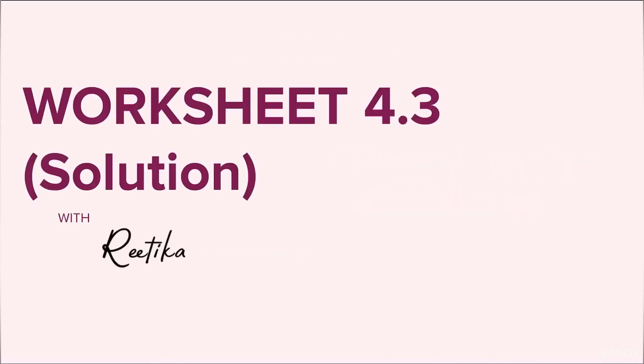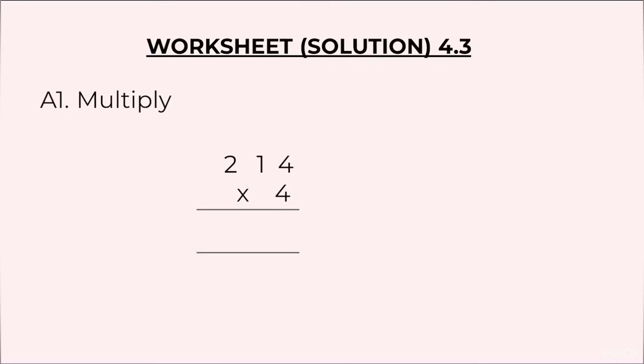Once you have solved the questions, look at the solutions. First one was 214 into 4. We will start by multiplying 4 fours are 16, 1 at the top, 6 at the bottom. Then 4 ones are 4 plus 1, 5. After that 4 twos are 8. 856 is the answer.